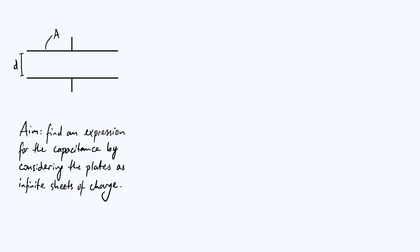It seems reasonable that capacitance might depend on d, because if we take the plates towards infinite separation and just pull them apart, they're going to be interacting less and less the further apart they get. So you might intuitively think that capacitance is going to decrease as we increase that separation, which does turn out to be true. Now A and d are the only two parameters we need to determine the capacitance, to a pretty good approximation at least, but it's going to be helpful to also label the charge stored on each of the plates.